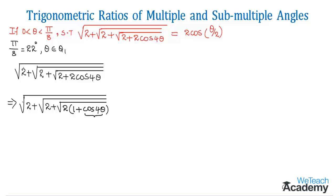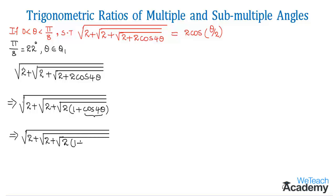Let us write cos4θ in terms of cos(2·2θ). Considering 2θ as 'a', we apply the formula 1 + cos2a = 2cos²a. So 1 + cos(2·2θ) becomes 2cos²2θ.